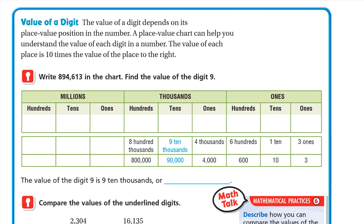The value of a digit depends on its place value position in the number. A place value chart can help you understand the value of each digit. The value of each place is 10 times the value of the place to the right.